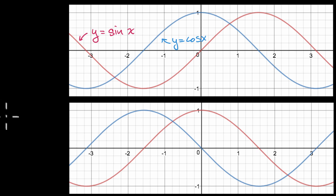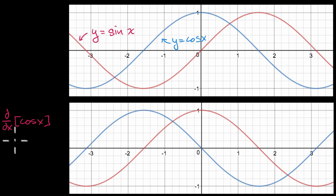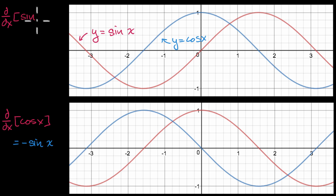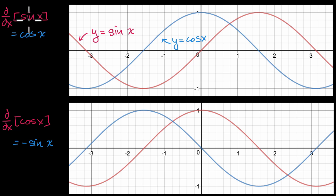What I'm going to do in this video is make a visual argument as to why the derivative with respect to x of cosine of x is equal to negative sine of x. We're going to base this argument on a previous proof we made that the derivative with respect to x of sine of x is equal to cosine of x. We're going to assume this, and I encourage you to watch that video — it's a fairly involved proof. But if we assume this, I'm going to make a visual argument that the derivative with respect to x of cosine of x is negative sine of x.